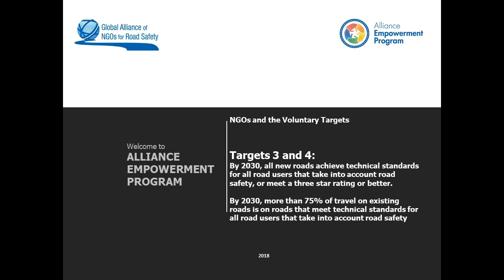In this webinar, Keith Johnson of the Fund for Global Health, a coordinating member of the three-star coalition, describes how you can advocate with your government for minimum three-star roads. The webinar will be backed up by a practical example presented by Matla Otsuhili of Alliance Member Society of Road Safety Ambassadors, or SOSA, from Botswana, based on their experience of using star ratings to advocate with their government.